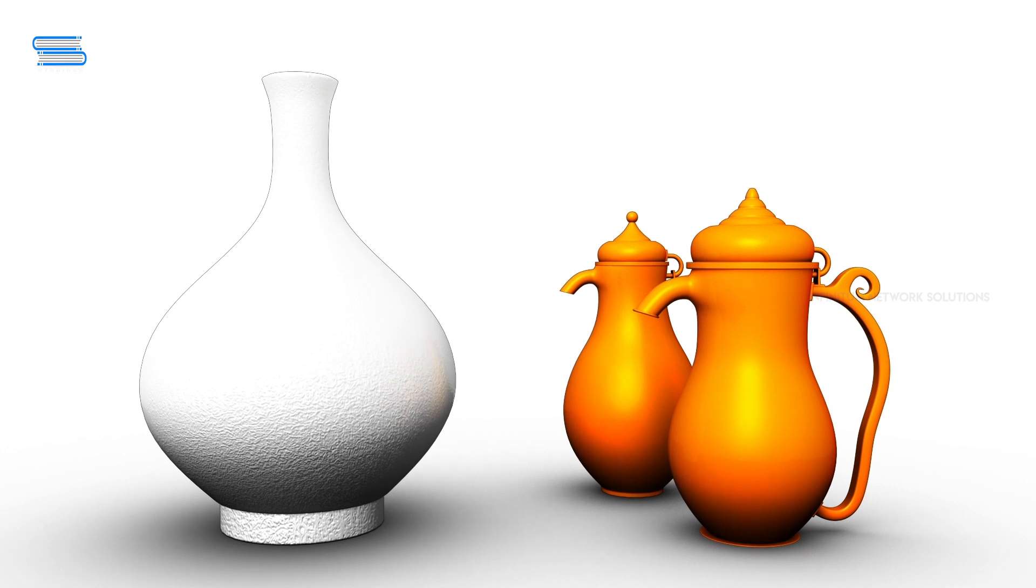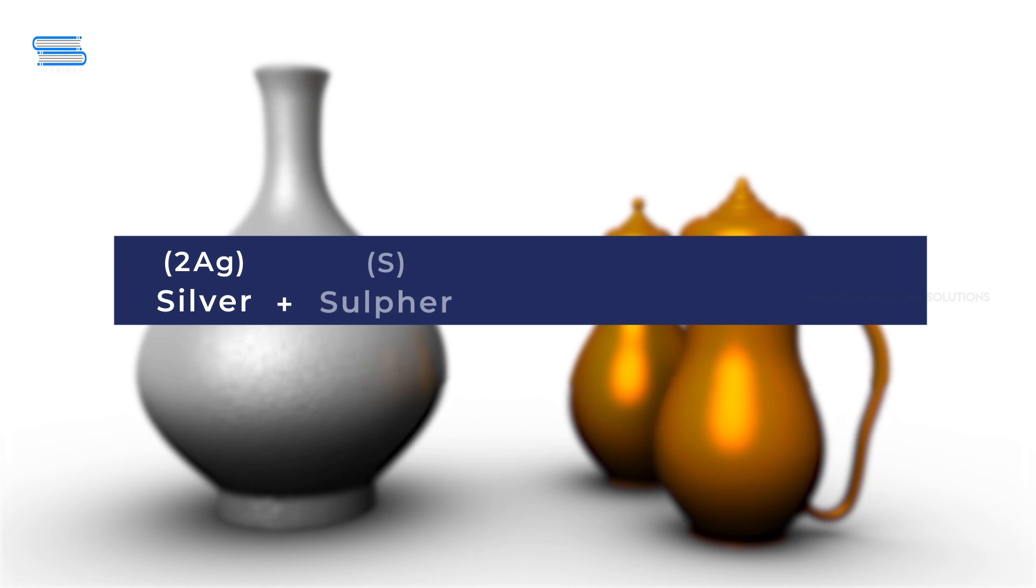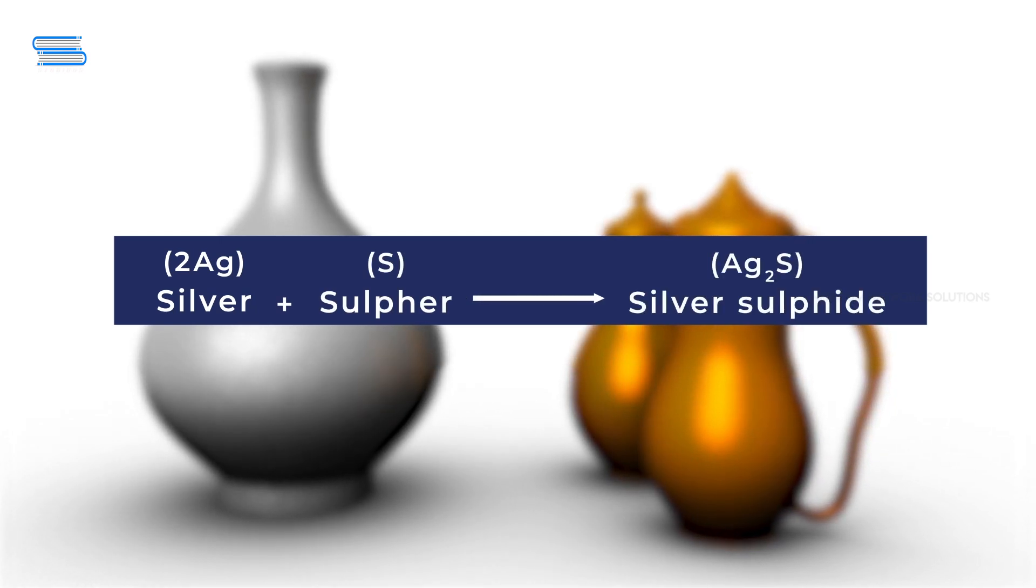When silver objects are exposed to air, they slowly turn black. Silver reacts with the sulfur in the air to form a coating of silver sulfide.